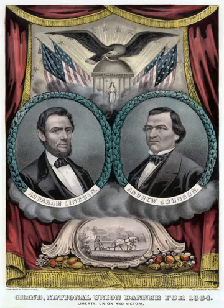The National Union Party was the temporary name used by the Republican Party for the national ticket in the 1864 presidential election, which was held during the Civil War. For the most part, state Republican parties did not change their name. The temporary name was used to attract war Democrats and border states, unconditional Unionists and Unionist Party members who would not vote for the Republican Party. The party nominated incumbent President Abraham Lincoln and for Vice President Democrat Andrew Johnson, who were elected in an electoral landslide.